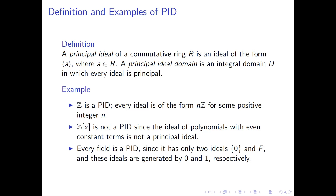Returning to something that is an example: any arbitrary field F happens to be a PID. A field only has two ideals — the trivial ideal containing zero, and the whole field F. These ideals are generated by zero and one respectively. The set containing just zero is the ideal generated by zero, and the whole field F can be generated as an ideal by the number one.